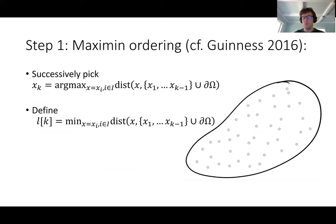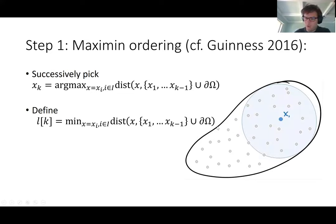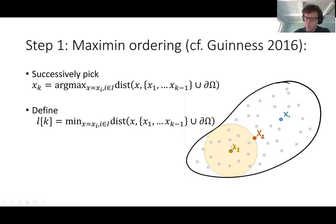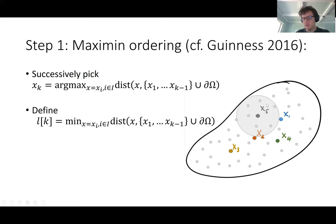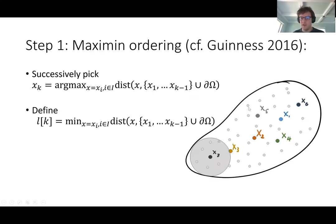For the old version, we need to reorder degrees of freedom. At each step, we select the point furthest away from the boundary of the domain and from other already-selected points — a maximin ordering. We also record l_k, the length scale of each point: the distance to the nearest already-picked point or to the boundary at the time the point is picked. So the length scale of the first selected point would be this radius because that's the distance to the nearest point and boundary. We order all points in the order they were picked.